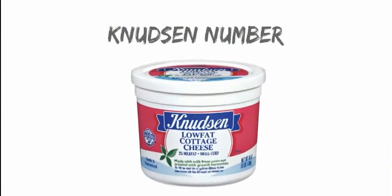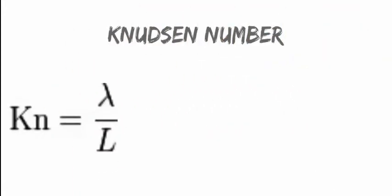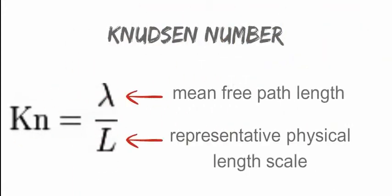The Knudsen number Kn, not the Knudsen low-fat cottage cheese, is a dimensionless number defined as the ratio of the molecular mean free path length λ to a representative physical length scale L. This length scale could be, for example, the distance between two parallel plates.